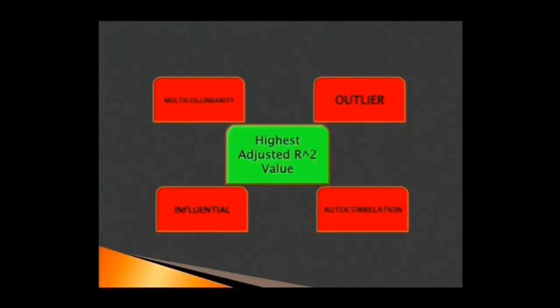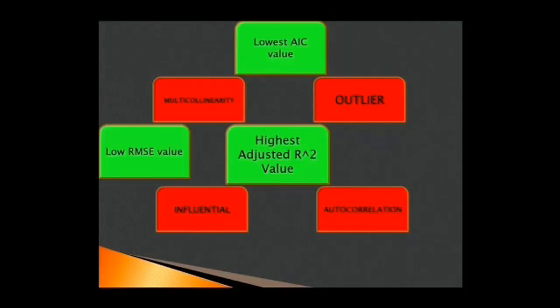This model is indeed the best because it is free of multicollinearity, free of outliers, free of influential points, and free of autocorrelation. Furthermore, it has the highest adjusted R-square value, lowest AIC value, low RMSE value, low MAE value, and very small p-value.